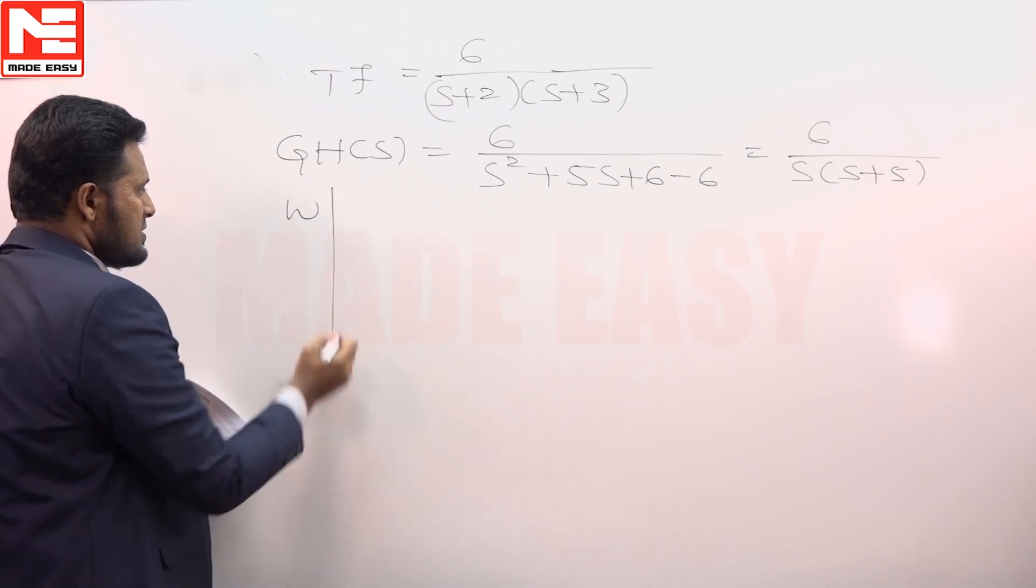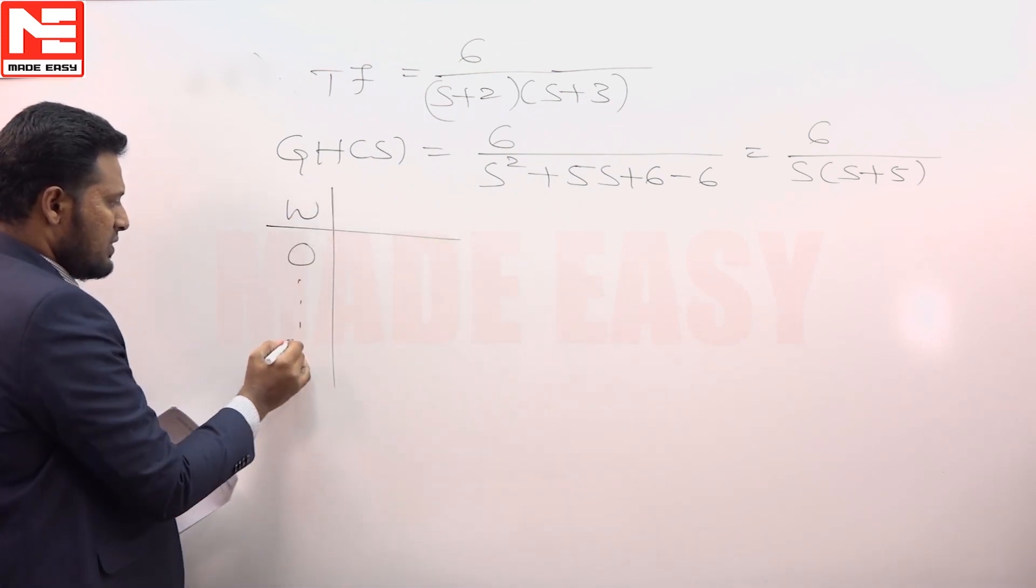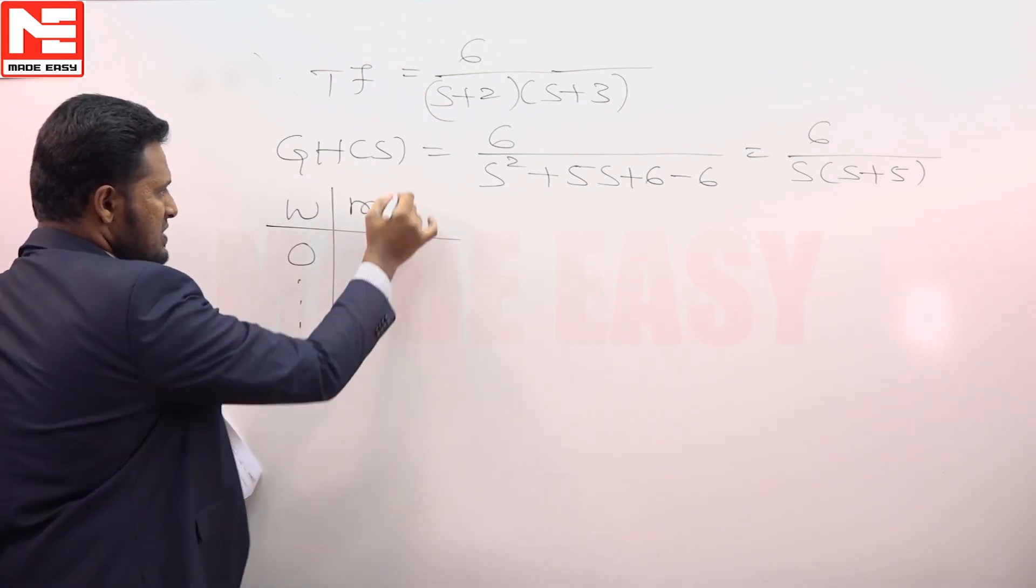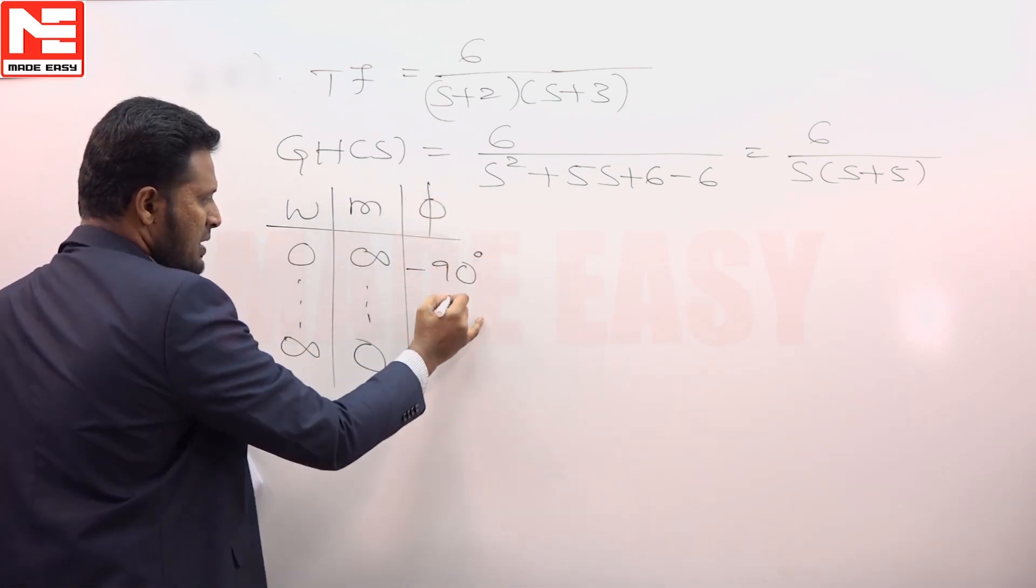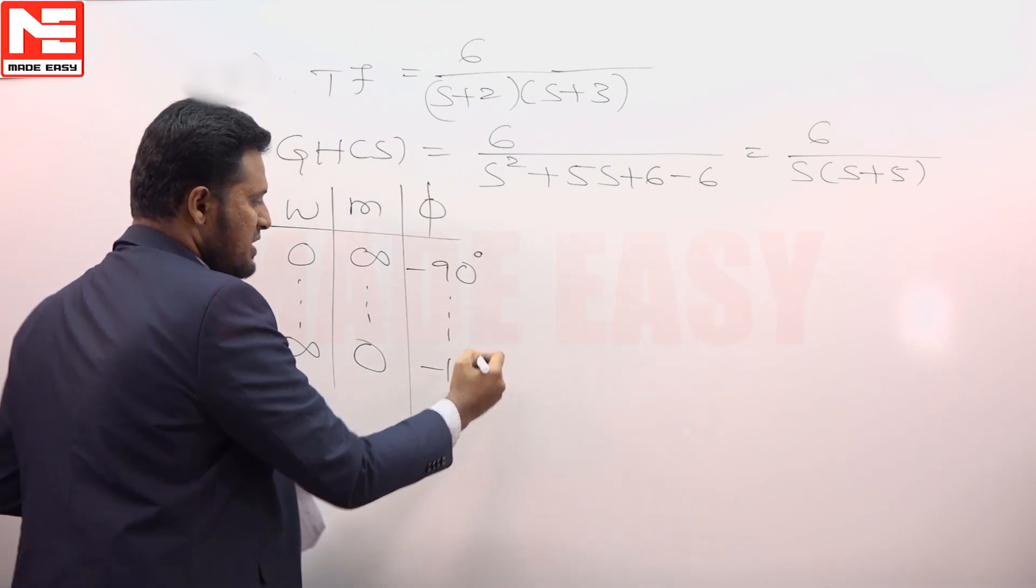When omega is varied from 0 to infinity, magnitude of this function varies from infinity to 0. Phase of this function varies from minus 90 degrees to minus 180 degrees.